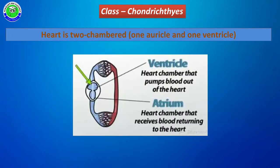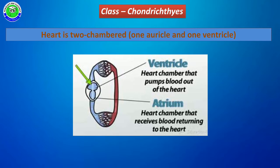These members have a heart with two chambers. One chamber is called the atrium and another one is called the ventricle. These are the two chambers present in their heart, making them two-chambered heart animals.